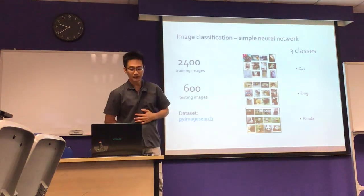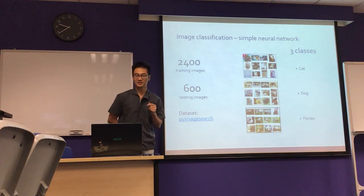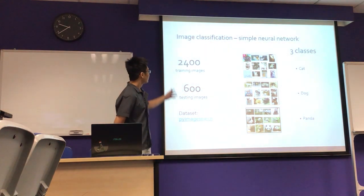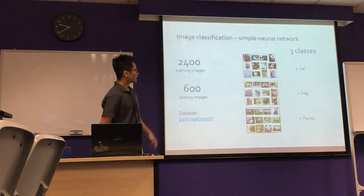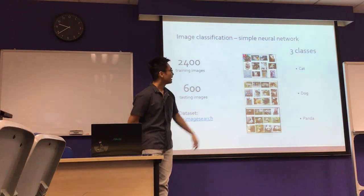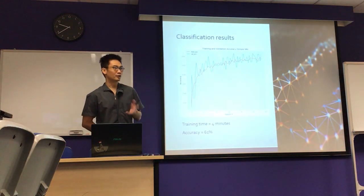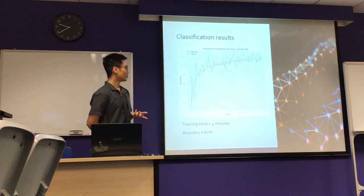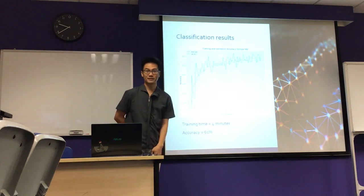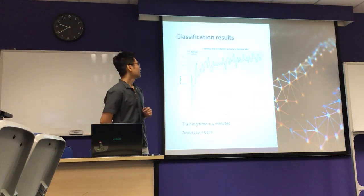I started with a simple neural network which has three classes. The dataset is from image search. There are about 3,000 images total — 1,000 for each class of cat, dog, and panda. I trained the model; it doesn't take a long time, only 4 minutes, and achieved an accuracy of 61%. I was ready to test the model.